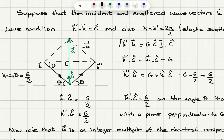The incident k vector is at an angle theta with respect to a plane, and k prime is specularly reflected from this plane at angle theta. If we look at k prime minus k, that gives g, the reciprocal lattice vector. The projection of k or k prime onto this reciprocal lattice vector should be equal to g over 2.